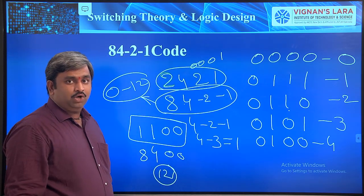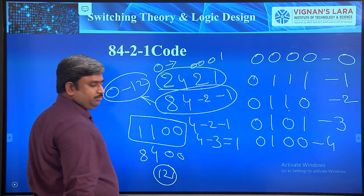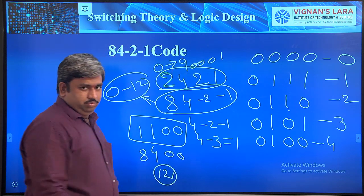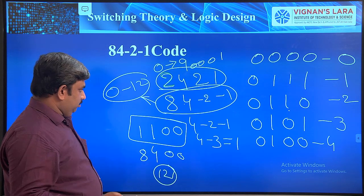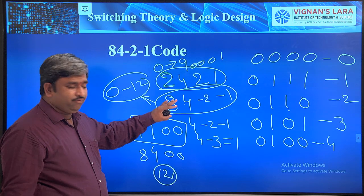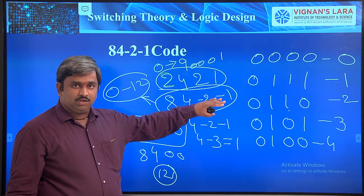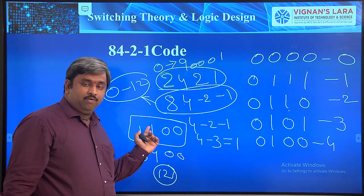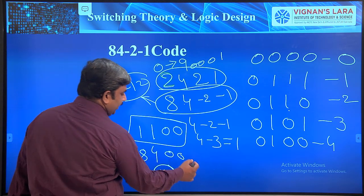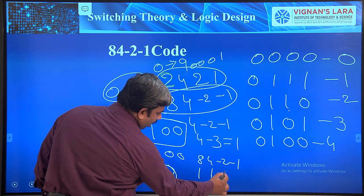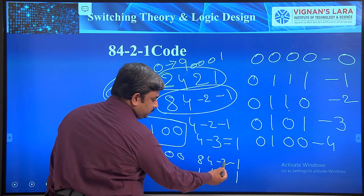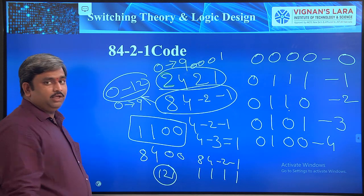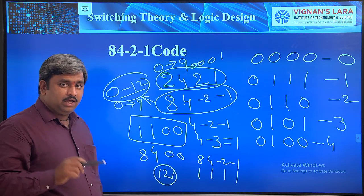For the 2421 code: since all weights are positive, the maximum value is 2 + 4 + 2 + 1 = 9, so it represents 0 to 9. For 8, 4, -2, -1 code: with all bits on, 8 + 4 + (-2) + (-1) = 9. So both codes represent 0 to 9. Although 8, 4, -2, -1 can theoretically reach 12, we consider only 0 to 9 as valid for machine use.